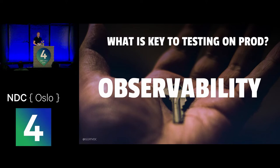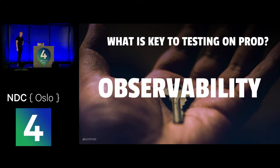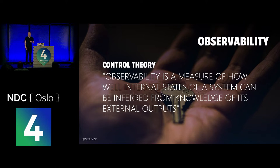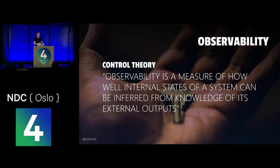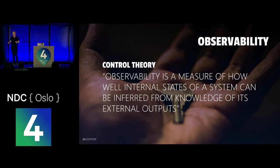So I think we can agree that testing in production is important. And the key to actually being able to do this in production is observability — that's the link back to my talk. Observability comes from control theory. The official description from Wikipedia: observability is a measure of how well internal states of a system can be inferred from knowledge of its external outputs. Which means we want to be able to query our system on how it's performing without changing the system itself.